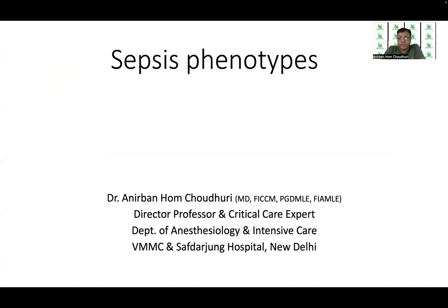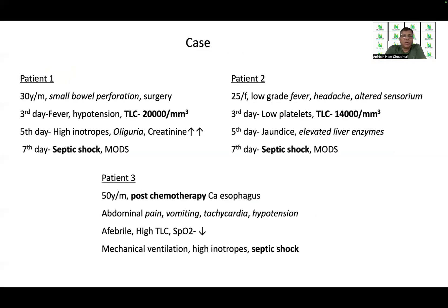We all know that sepsis is not a uniform presentation. Let us start with a case with three different patients. Patient 1 is a 30-year-old male who had a small bowel perforation and had undergone surgery. On the third day, the patient develops fever with hypotension and a raised leukocyte count. On the fifth day, the patient requires high inotropes and goes into oliguria with a rising creatinine. And on the seventh day, the patient goes into high septic shock with multi-organ failure.